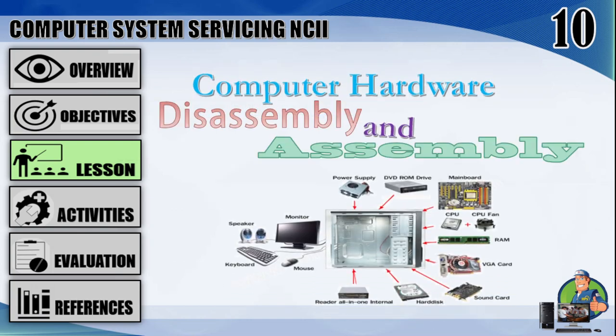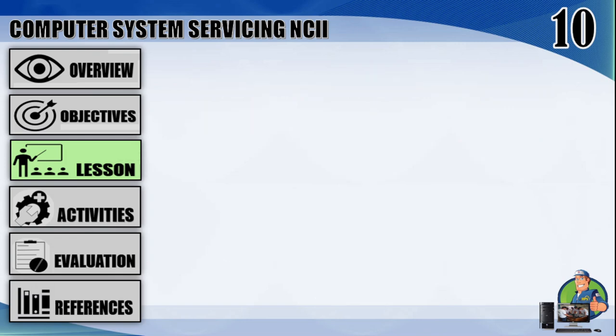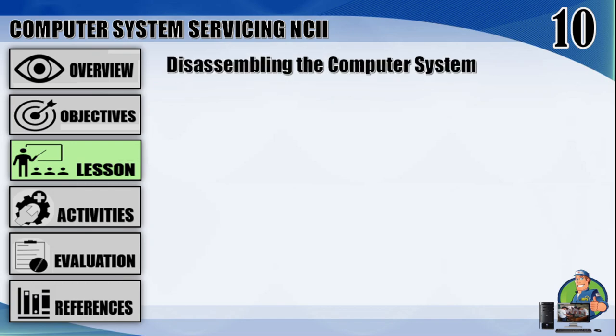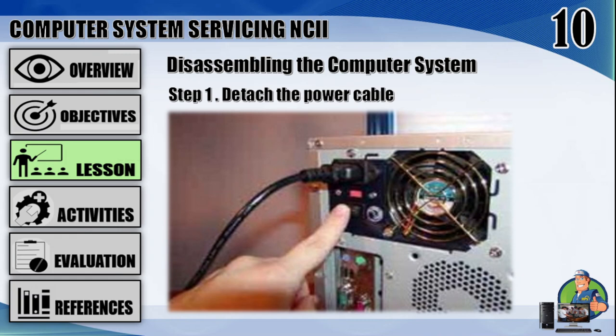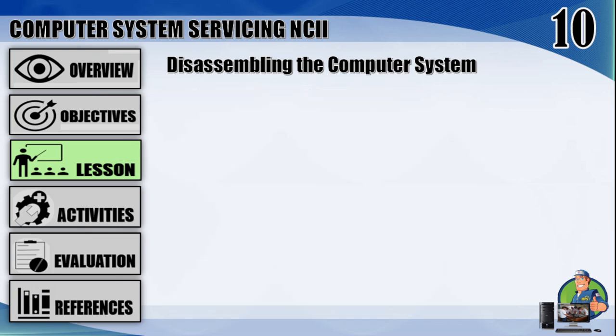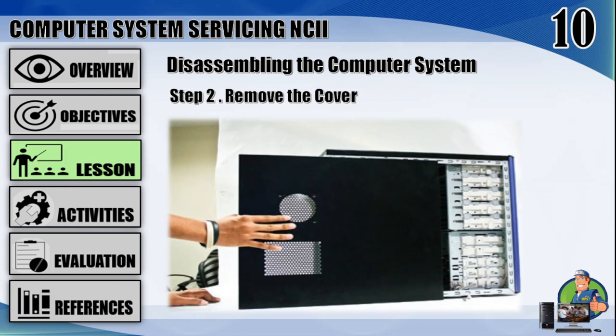Computer hardware disassembly and assembly. Steps on how to disassemble a computer system. Step 1: detach the power cable — unplug all the outside cables and wires attached to the chassis. Step 2: remove the cover — remove the side panel and outer case of the chassis.